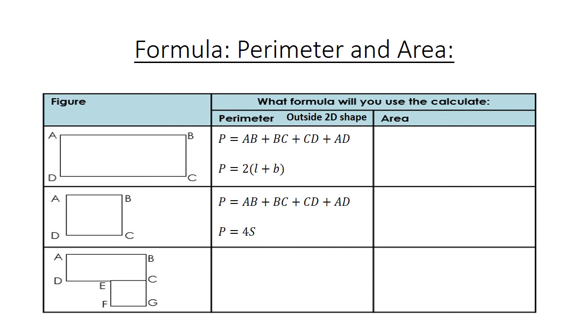The third figure we have now, a combined figure. The perimeter is AB plus BC plus CG plus FG plus EF plus DE plus AD. You have to go around the 2D shape. Area is inside a 2D shape.